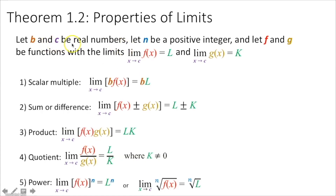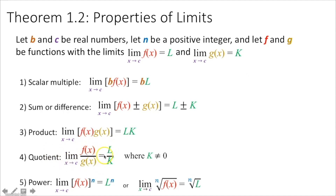Now let's talk about Theorem 1.2, properties of limits. Let b and c be real numbers, let n be a positive integer, and let f and g be functions where the limit as x approaches c of f(x) equals L and the limit as x approaches c of g(x) equals K. The scalar multiple property says the limit of b·f(x) equals b times L. The sum or difference property says the limit of f(x) ± g(x) equals L ± K. The product property says the limit of f(x)·g(x) equals L·K. The quotient property says the limit of f(x)/g(x) equals L/K. The power property says the limit of [f(x)]^n equals L^n, and this works for radicals too since they can be rational exponents.